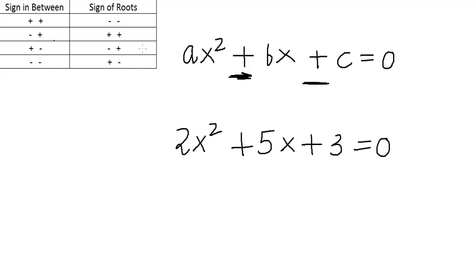I highly recommend remembering this table as it will be very convenient to solve quadratic equations. Let's take this example. Suppose you have to solve this quadratic equation: 2x squared plus 5x plus 3 is equal to 0. The sign in between is plus-plus. The first thing to focus on is the product, which is 3 into 2 = 6. So now we need to find the factors of 6 which give a sum of 5.